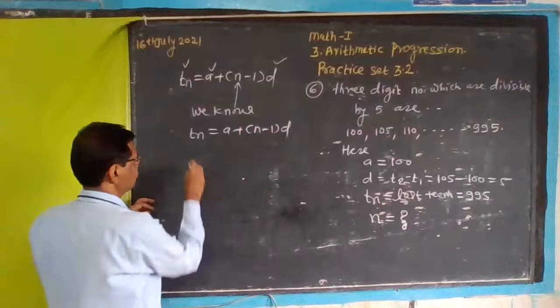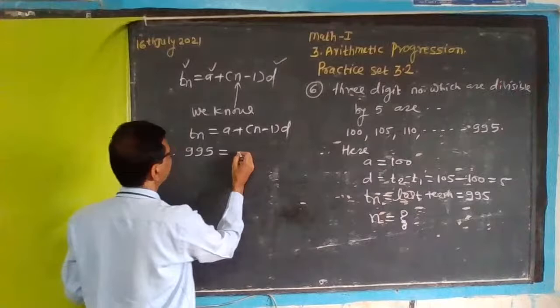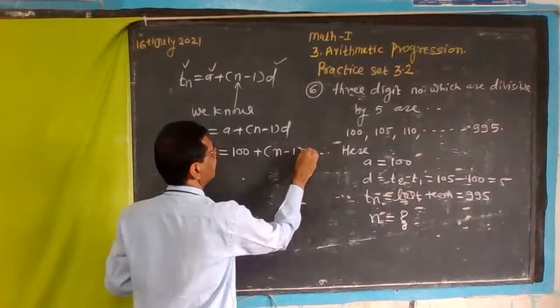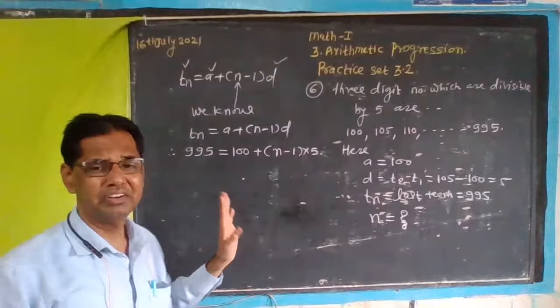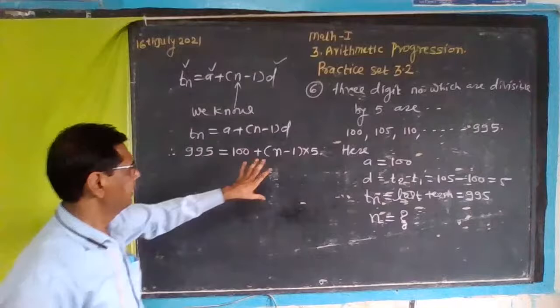So tn is 995, that equals a which is 100, plus n into d which is 5. We substitute these values: 995 equals 100 plus (n-1) into 5.